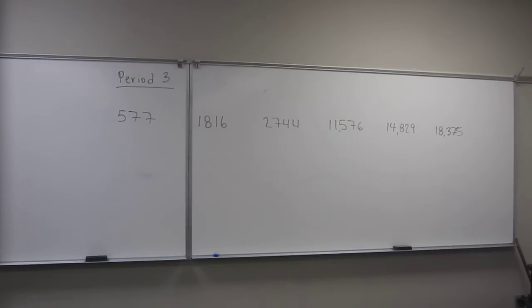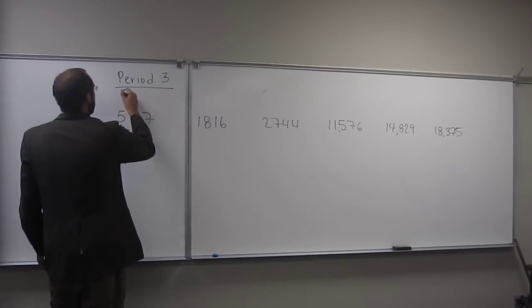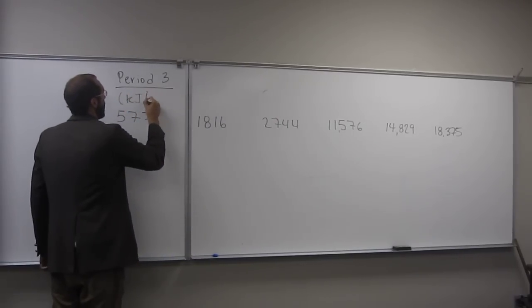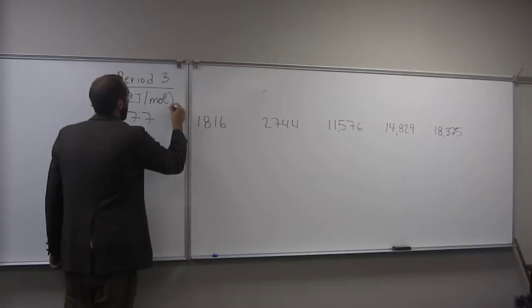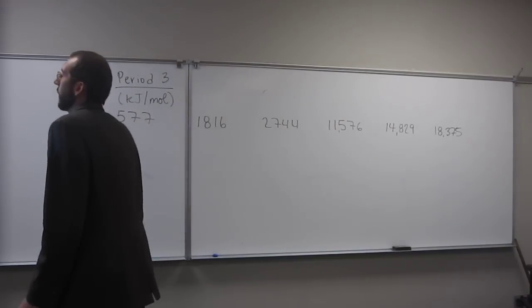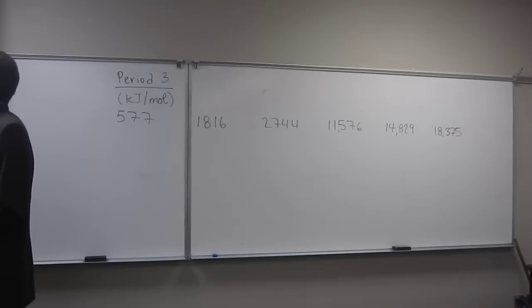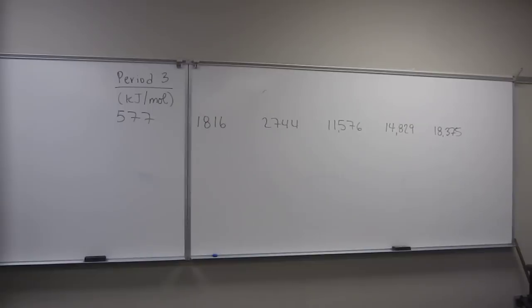Okay, wonderful. Well, let's do this problem. So it says, name the period three element with the following ionization energies. And these ionization energies are in kilojoules per mole. So 577 kilojoules per mole, et cetera. And write its electron configuration. Well, the electron configuration shouldn't be difficult for you guys once you figure out what the element is.